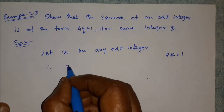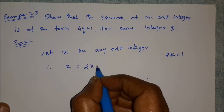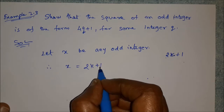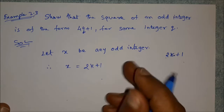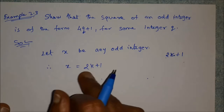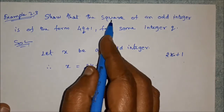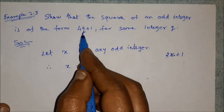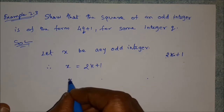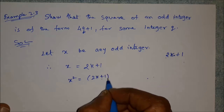Therefore x is equal to 2K plus 1. We have the square of an odd integer. Then x squared is equal to (2K plus 1) squared. We square both sides.